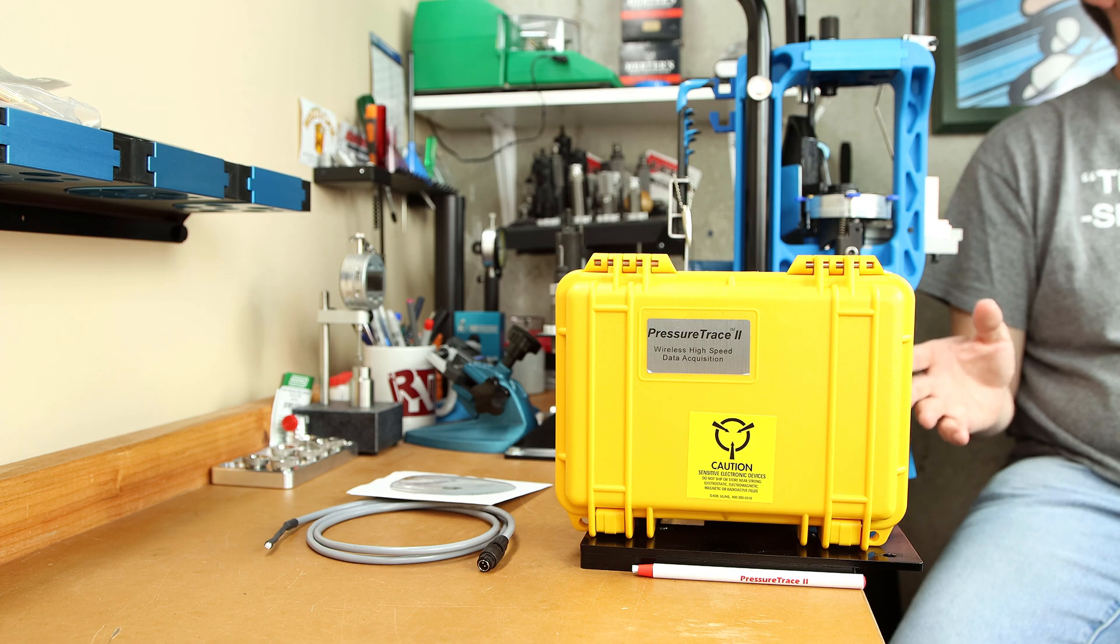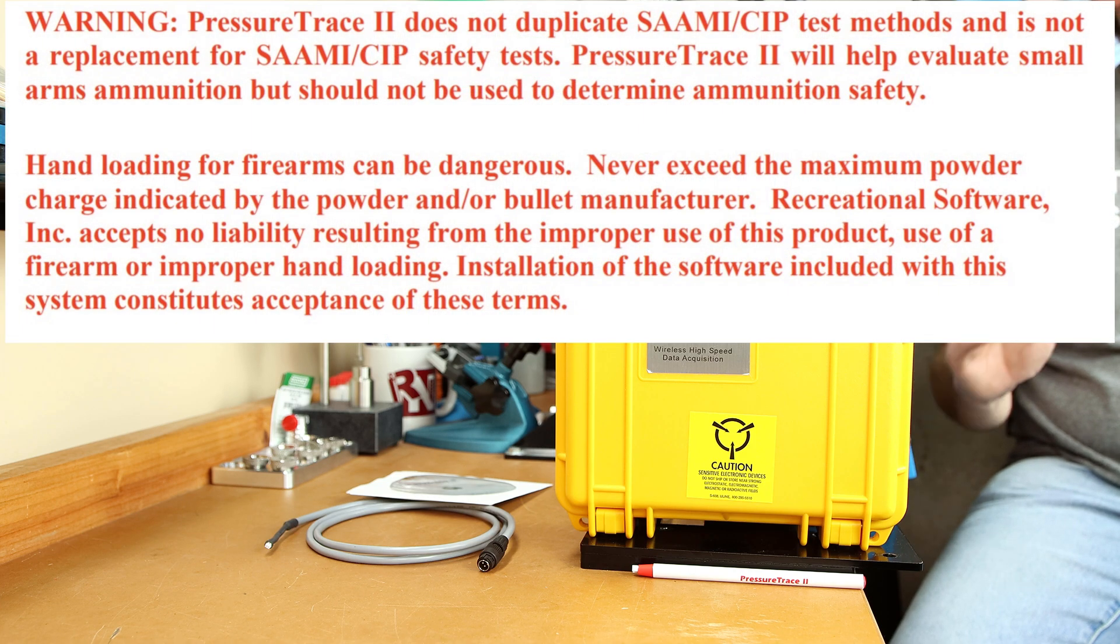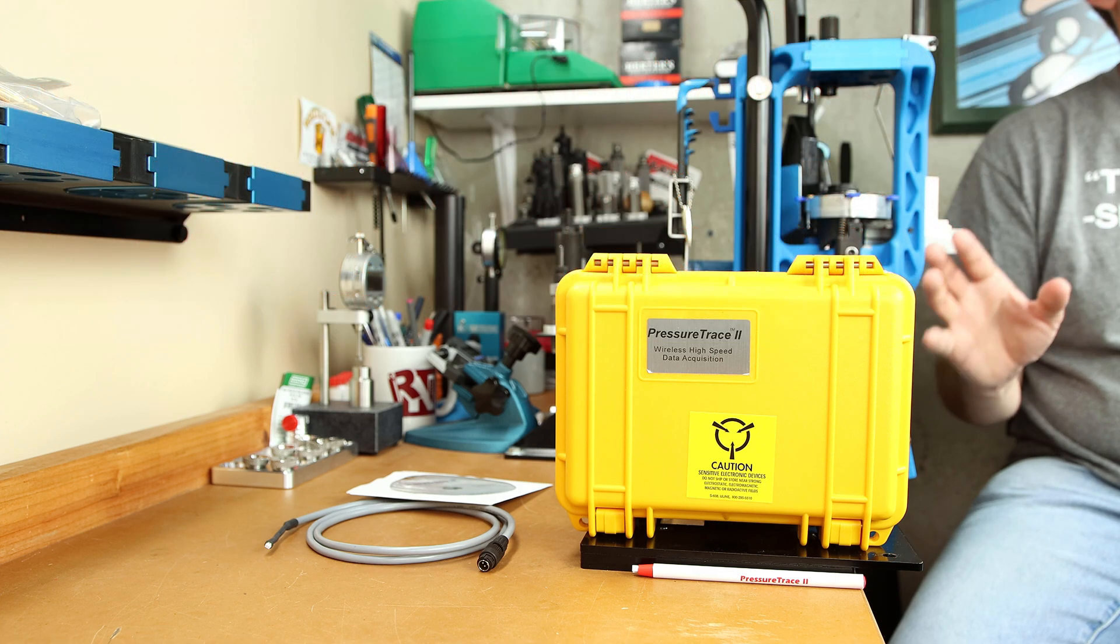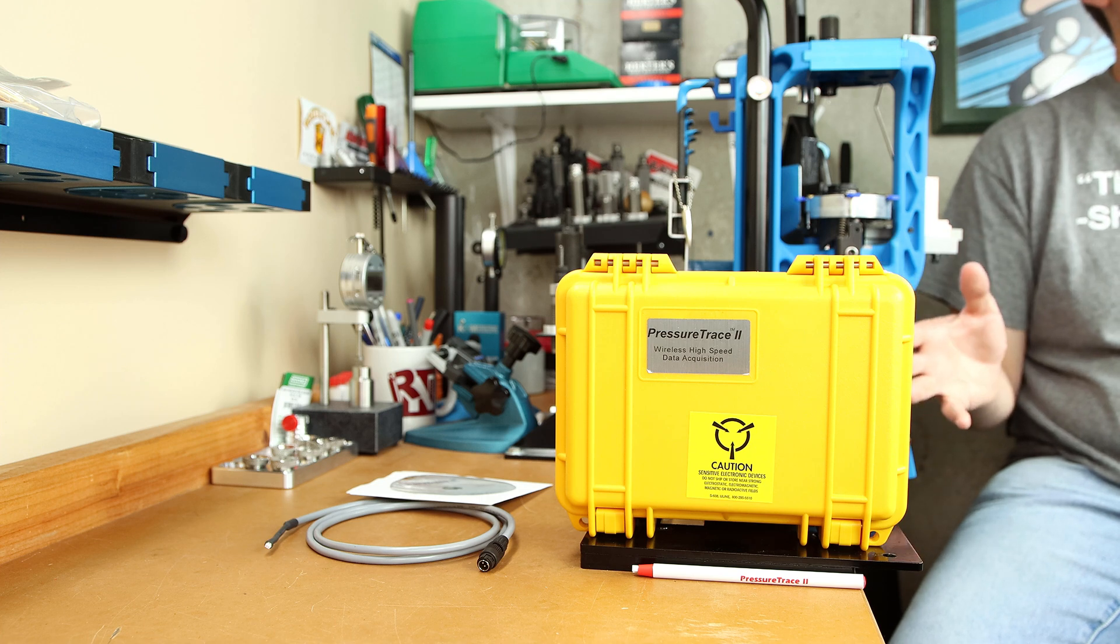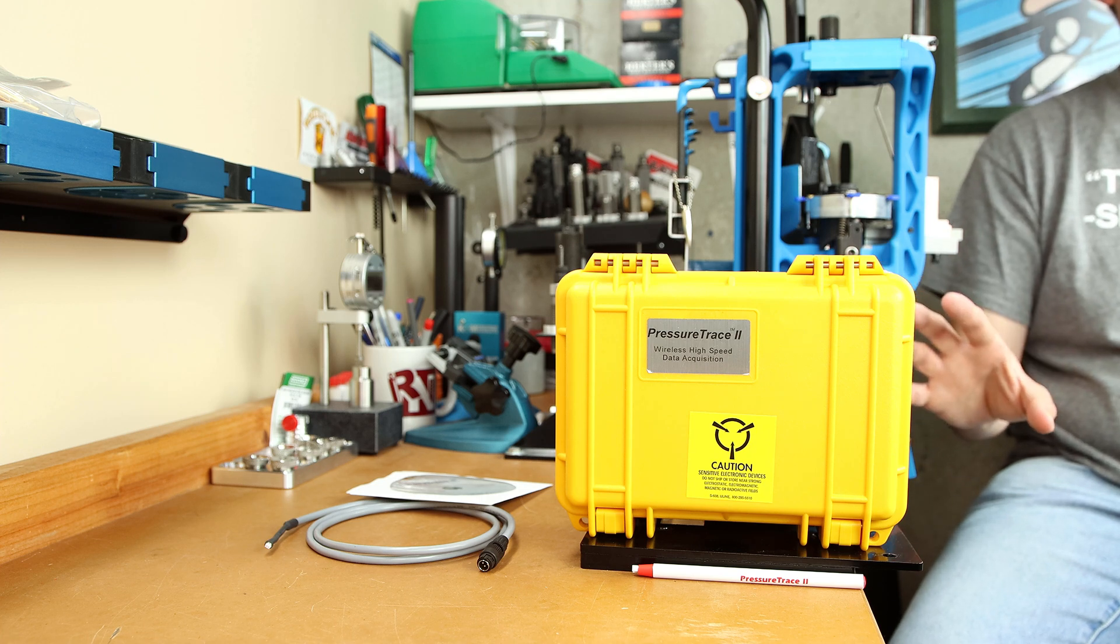Right out of the gate, let's start off what it's not for. The Pressure Trace 2 system does not duplicate SAAMI or CIP test methods, and it is not a replacement for those tests. The Pressure Trace system is not designed to determine if ammunition is safe or not. Don't look at the data we provide and decide that it looks like you can start going outside of published load data.